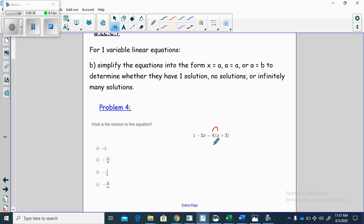4 times x, using distributive property, 4 times x is 4x, 4 times 3 is 12. So I've got 1 minus 2x is equal to 4x plus 12.